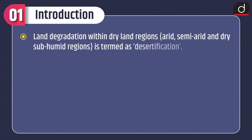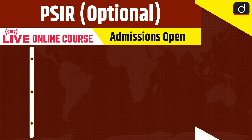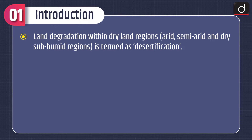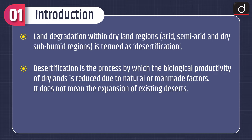Land degradation within dry land regions, i.e. arid, semi-arid, and dry sub-humid regions, is termed as desertification. Desertification is the process by which the biological productivity of dry lands is reduced due to natural or man-made factors. It does not mean the expansion of existing deserts.